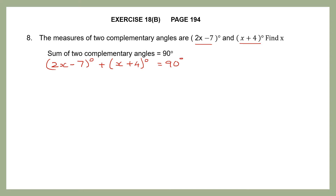I am going to open my brackets. 2x−7 degrees. When I have a plus sign before brackets, there will be no change in whatever is within the brackets. So I am going to write whatever is inside the brackets as it is: plus x degrees plus 4 degrees. So when I add up these two angles, I should get 90 degrees.